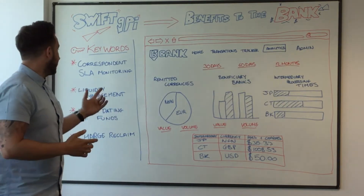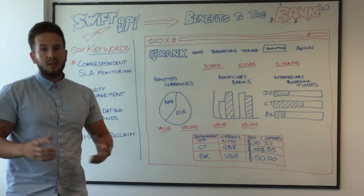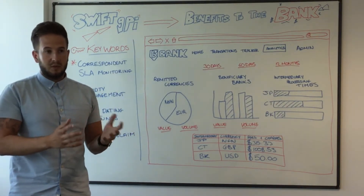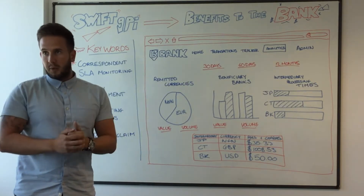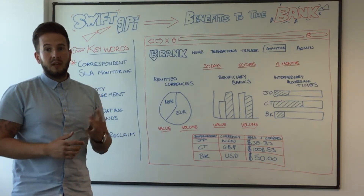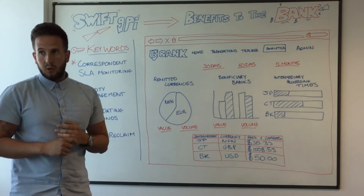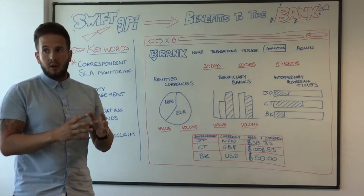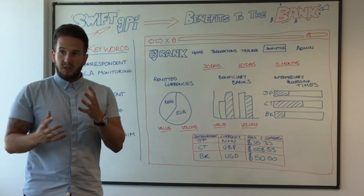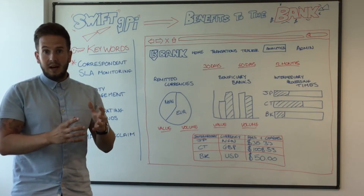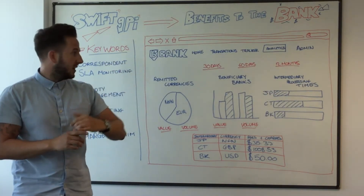One of the key things is correspondent SLA monitoring. Today banks will have a correspondent network and they might have multiple different nostros in different countries. What they're going to look at is which of my correspondents and my agent banks are giving me the best value for money in the services that I provide. As the remitting party, they can now see how long things have taken on their correspondent bank side.